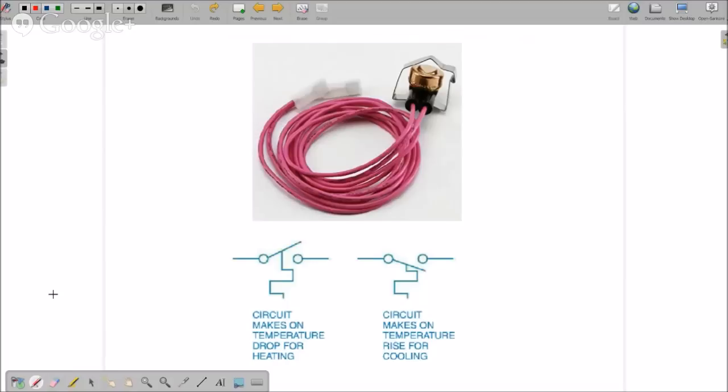All right. So now this is where this makes a little bit more sense. This indicates our bimetal strip right here. So as it heats up, it pushes those contacts apart.